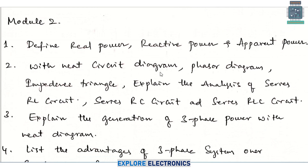In module 2, coming to definition-type questions, you need to define real power, reactive power, and apparent power. You need to write both the explanation and the expression — one mark for the definition and one more mark allocated for the expression. Then, with a neat diagram, phasor diagram, and impedance triangle, explain the analysis of series RL circuit, series RC circuit, or RLC circuit. If they ask to explain the analysis of these circuits, you need to write the impedance triangle, phasor diagram, and circuit with the related expressions.